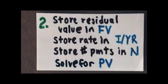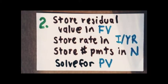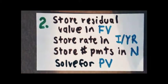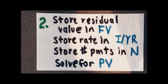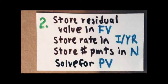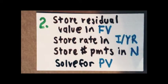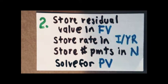With calculators such as the Hewlett-Packard 12C, you'll be using the periodic interest rate instead. You're going to store the number of payments for the lease in N, and you're going to solve for present value, PV. The result is going to be negative, and we're going to use that negative result in step 3.